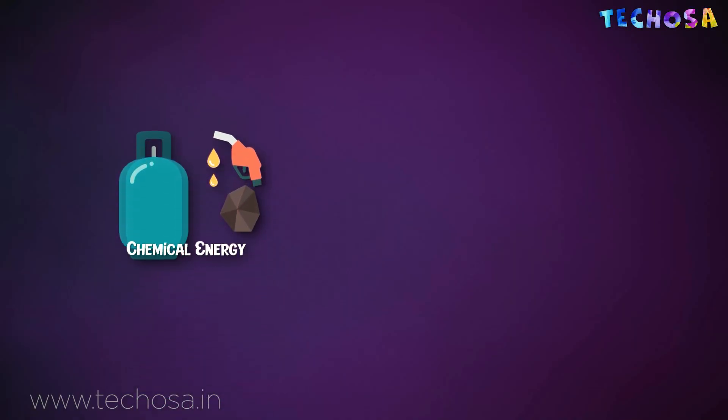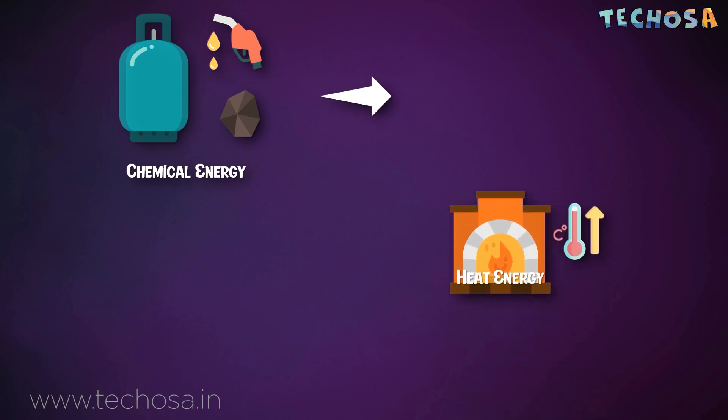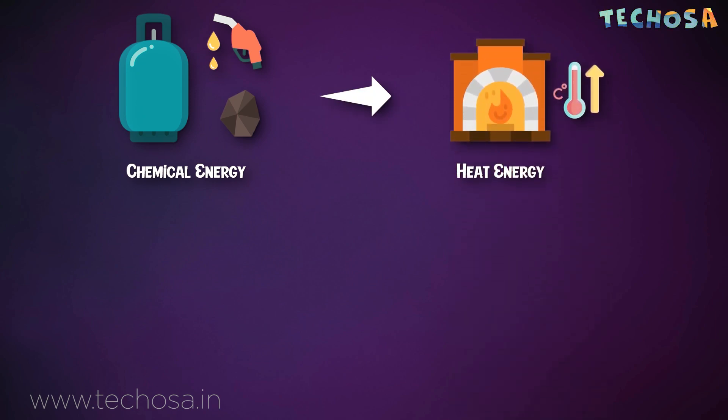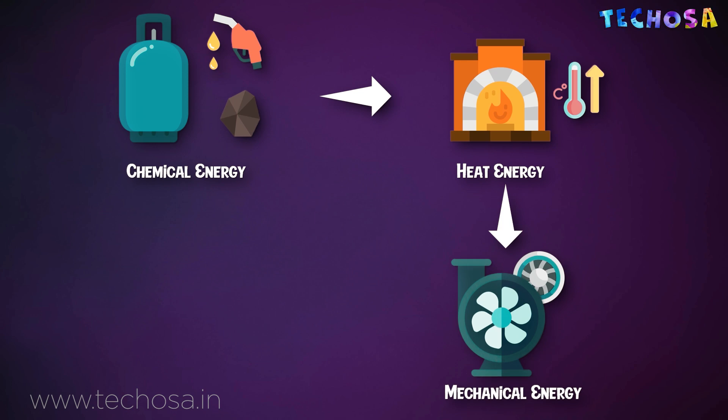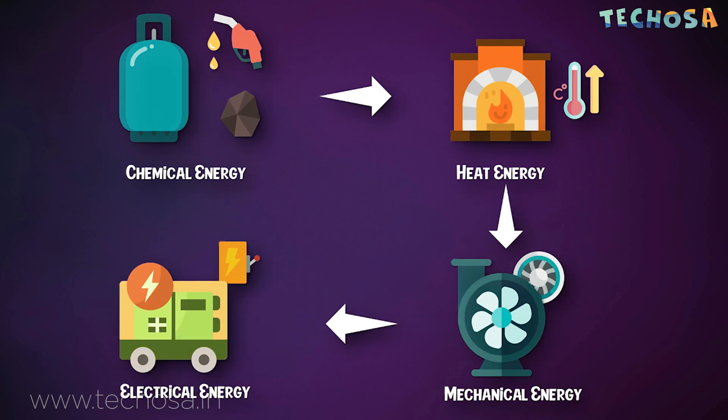Coal, gas and oil power plants are also called thermal power plants. Thermal power plants use heat energy by burning fossil fuels to boil water into steam. The steam is used to rotate turbines, which are connected to a generator to produce electricity. The chemical energy stored in fossil fuel is converted to heat energy while burning, then converted to mechanical energy in the turbine, and finally converted to electrical energy in the generator. Fossil fuels include LNG, coal and diesel, which are all non-renewable energy sources.